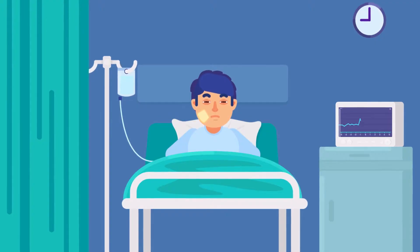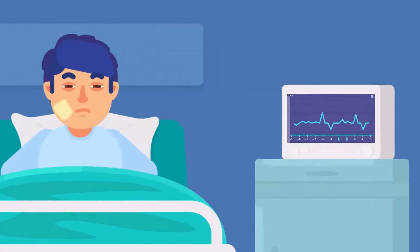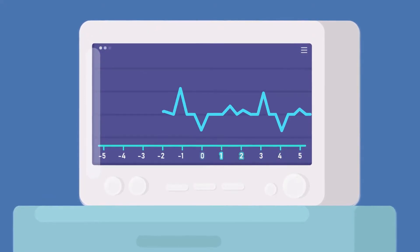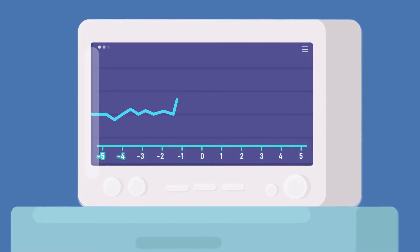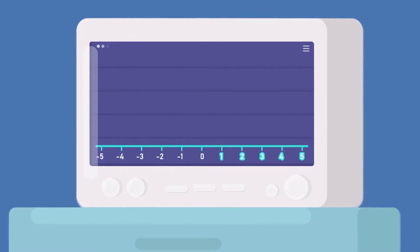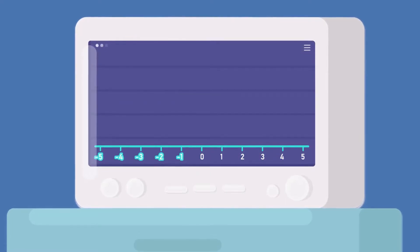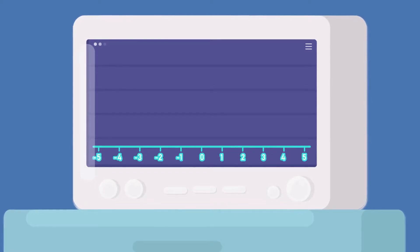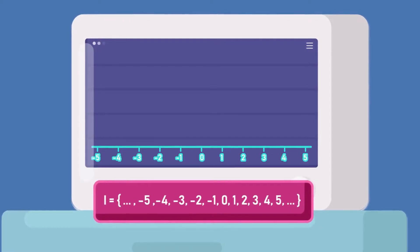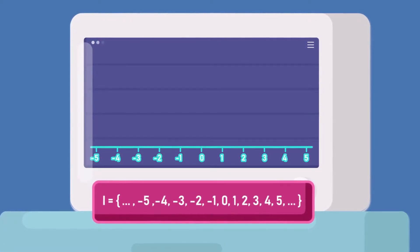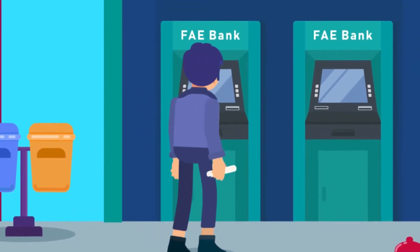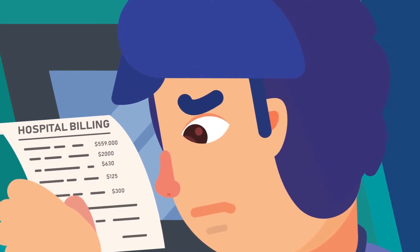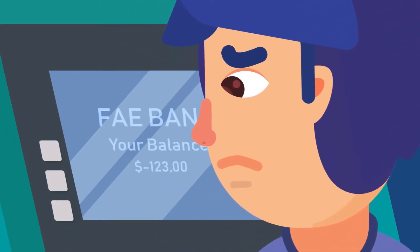Integers. On the number line, we not only can count forward, but also backward, until you can find negative infinity behind zero. All these positive, zero, and negative numbers with no fractional part are called integers. Sets of integers will be represented as notations below. In real life, positive and negative integers work in many situations, such as describing your bank balance.